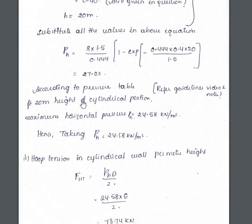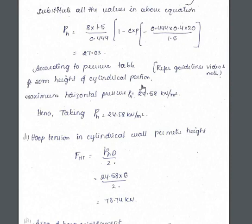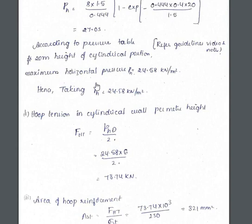According to the pressure table for 20-meter height of the cylindrical portion — refer the table in the guidelines — the pressure at 20 meters is 24.58 kilonewton per meter square. Since this table value is less than 27.03, we take ph = 24.58 kilonewton per meter square from the table.